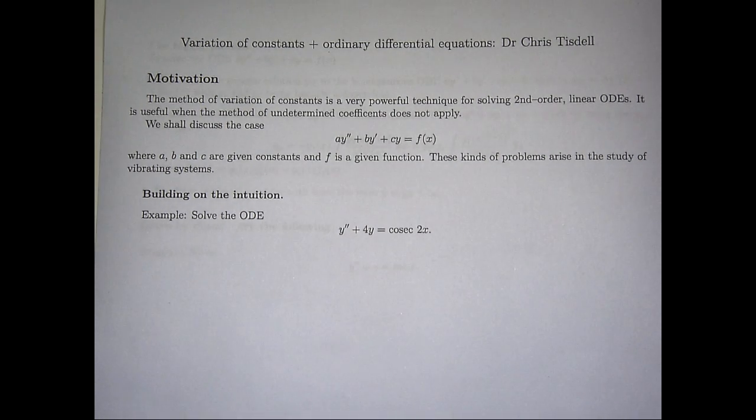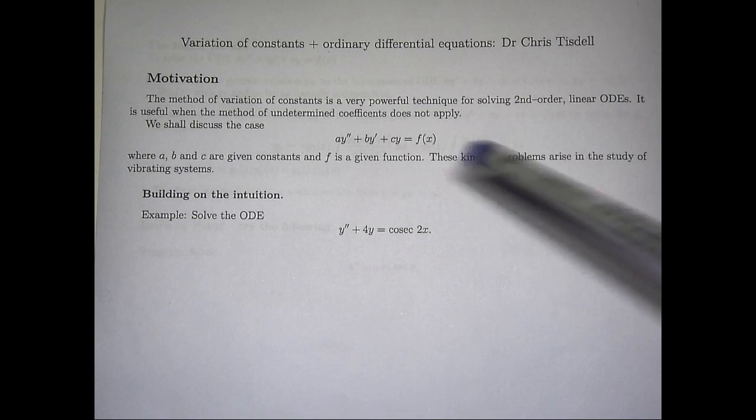Now, the method of variation of constants or variation of parameters is very powerful, and it's more general than the method of undetermined coefficients. This is a very general method that can be applied when we don't have a simple right-hand side.